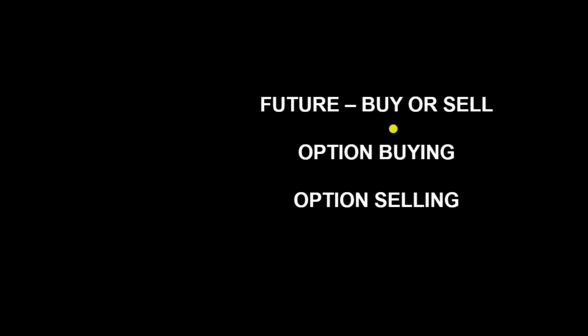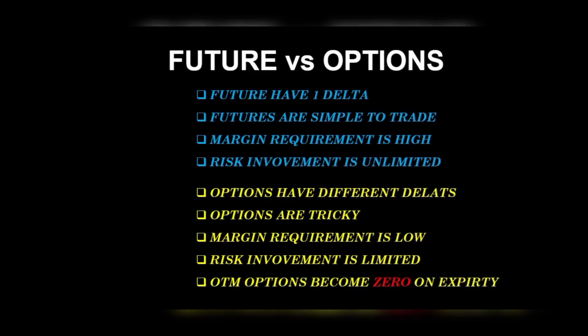If we compare futures and options, futures have one delta — delta is already covered in many videos uploaded on option greeks. If you go to Option Gyan you can get a playlist with many videos on option greeks. Delta tells you that if the spot price moves by a certain amount, how much will the derivative move. Future delta is always 1. At the same time, futures are simple to trade — you can set a stop loss. But options are comparatively tricky because you have to see which option is at-the-money, in-the-money, OTM, or consider volatility.